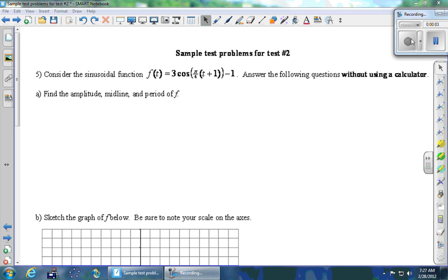This is problem number 5 on the sample test problems for test number 2. Consider the sinusoidal function f(t) = 3cos(π/4 times t + 1) - 1. Answer the following questions without using a calculator.